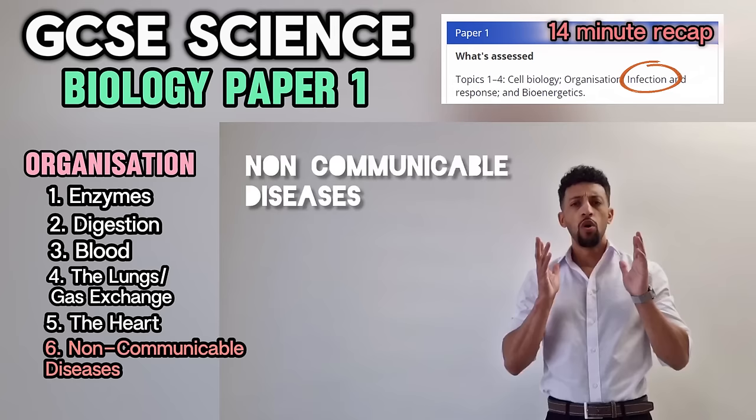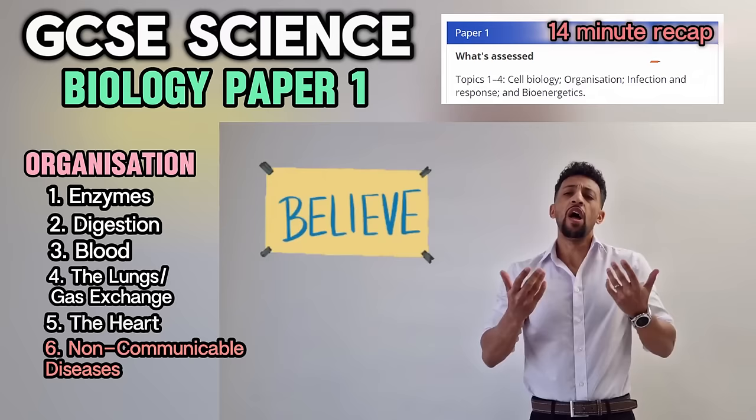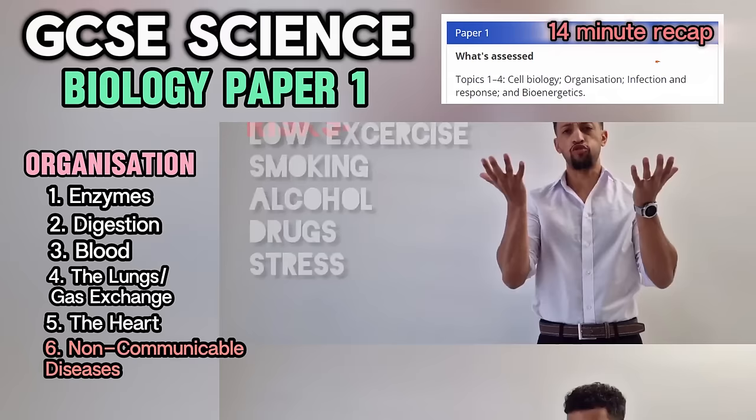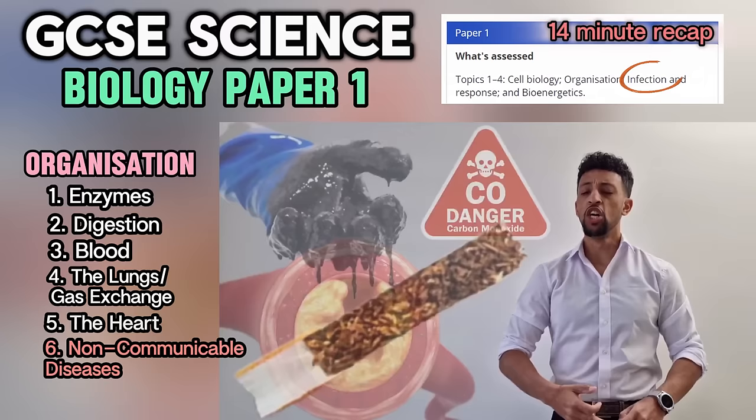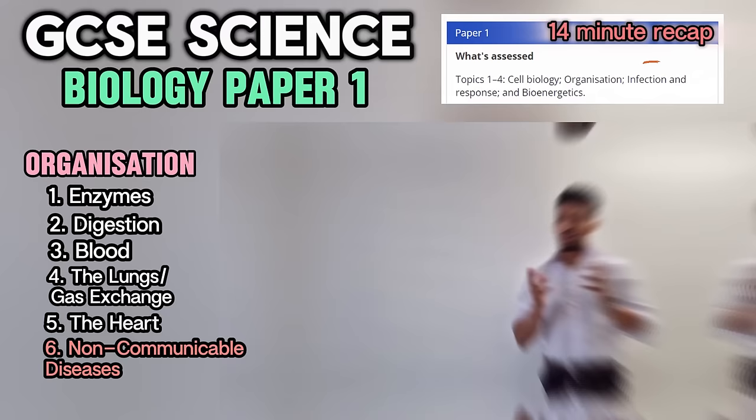We all wanna smoke, drink and eat badly without getting cancer and heart disease. I'm here to teach facts. There are five types of diseases — doing these things increases your risk. Smoking clogs up your arteries — tar, carbon monoxide and nicotine. Strokes or heart attacks can follow.